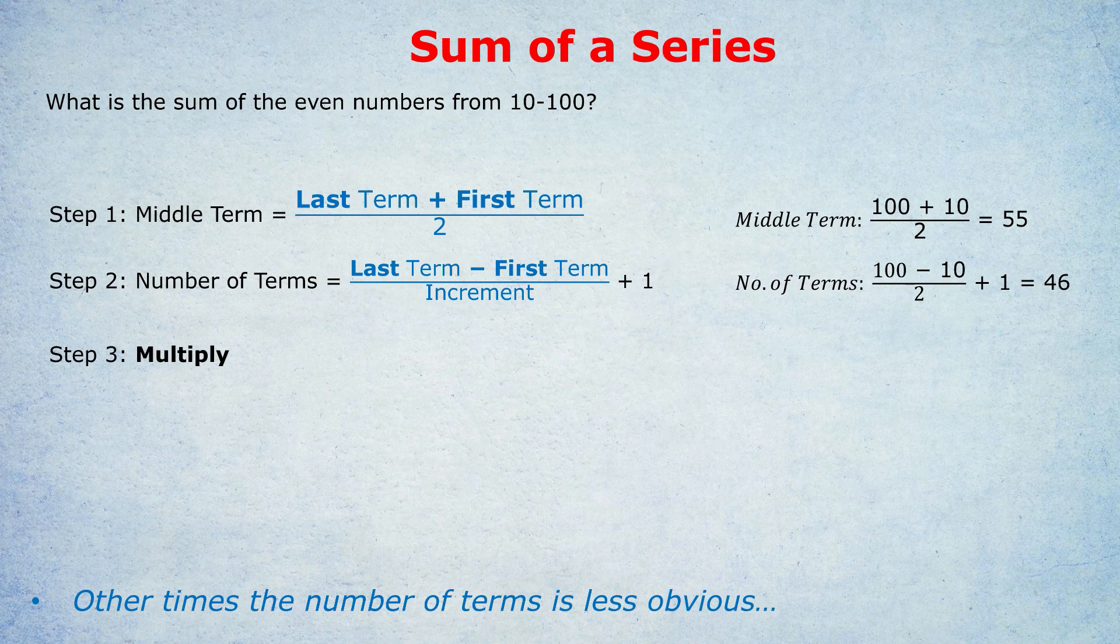Very quickly, just to recap why that formula works. The last term minus the first term gives you the range, as in how many integers in total are there in that range. We divide by the increment because we're not always wanting every single integer in that range. Sometimes we just want every other integer. So here we divide it by 2. And the reason we add 1 is because it's inclusive, including the first and the last. So that's why the formula exists.